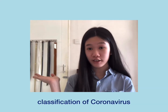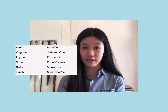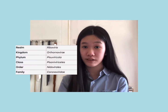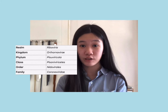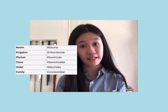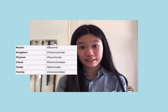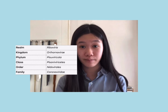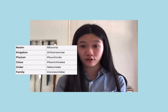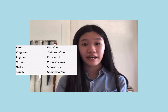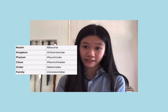And these are the classifications for coronavirus. It's a virus; its realm is Riboviria, its kingdom is Orthornavirae, its phylum is Pisuviricota, its class is Pisoniviricetes, its order is Nidovirales, and its family is Coronaviridae.